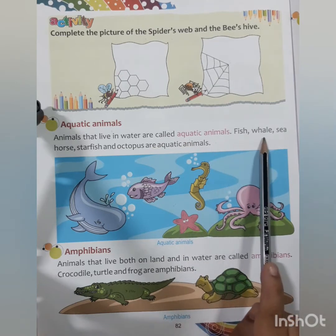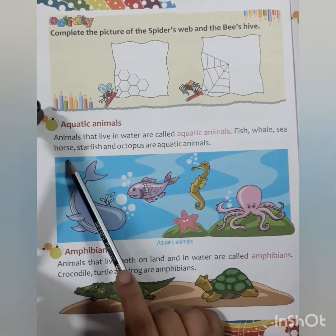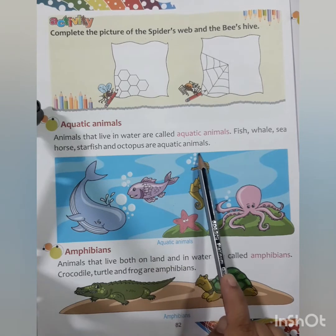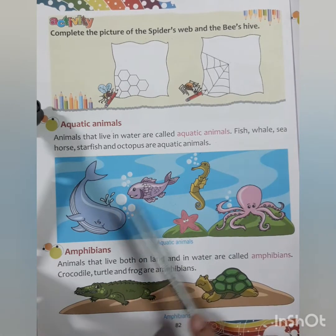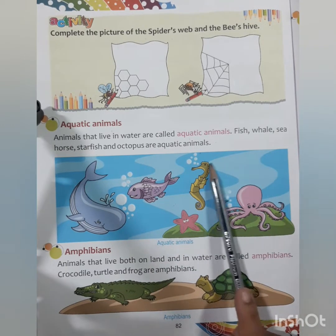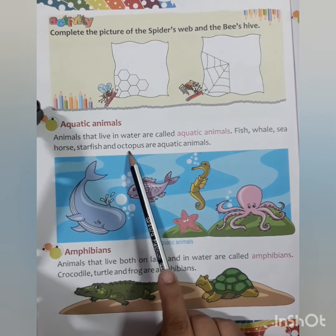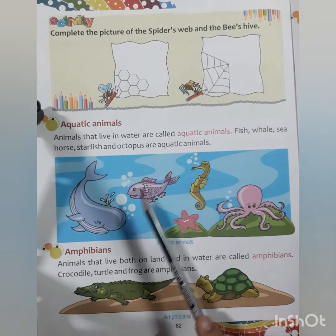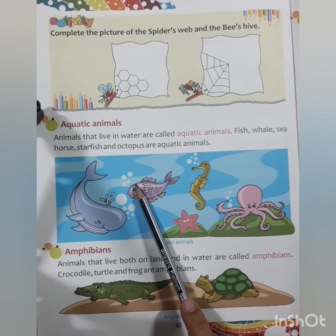Aquatic animals include fish, whale, seahorse, starfish, and octopus. These are all aquatic animals — they live in water, in seas, oceans, rivers, and even ponds.